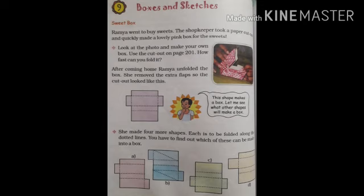This shape makes a box, but let's see what other shapes will make a box. Here is the shape given that if we fold it, then a box will be made. She made four more shapes, each to be folded along the dotted line. You have to find out which of these can be made into boxes.